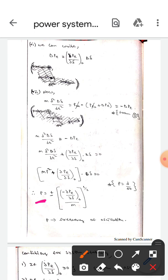Here, then the p-value, where p means frequency of oscillation, will be equal to ±√[-(∂Pe/∂δ)/m].